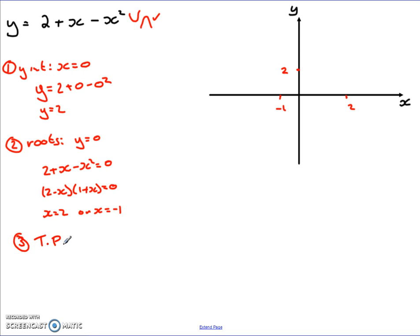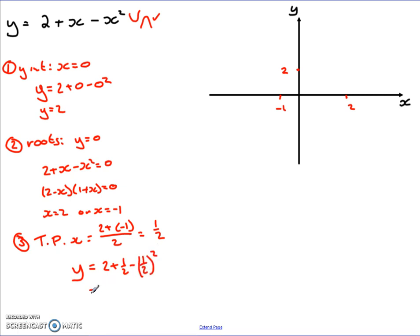The third thing is the turning point — same idea: find the middle of the two roots and substitute in. So x equals 2 plus negative 1 divided by 2, which equals one half. Then substituting in to find y: y equals 2 plus one half, minus (one half) squared, which is minus one quarter. That gives 9 over 4, or 2 and a quarter as a mixed number. So the turning point is at (1/2, 9/4). I can mark that on the graph.